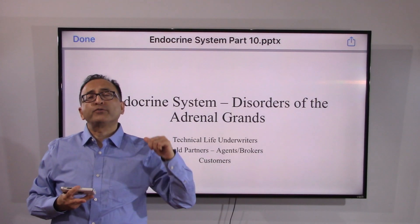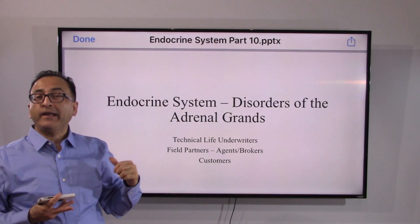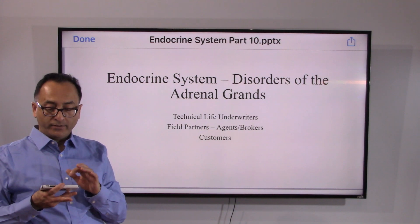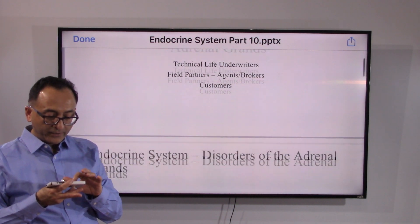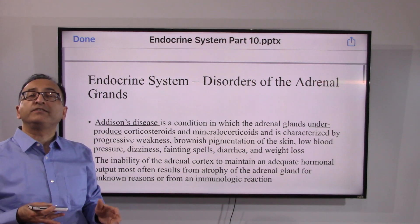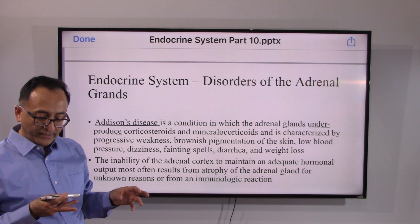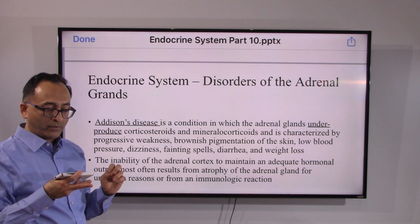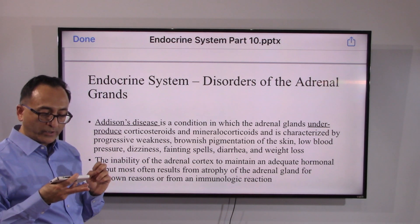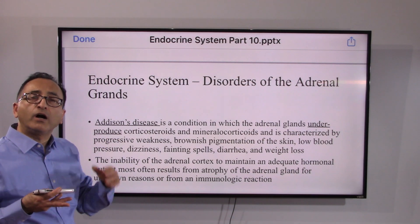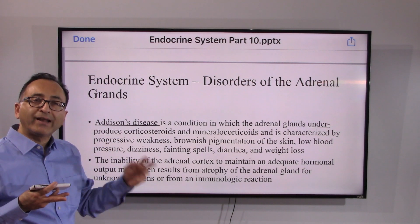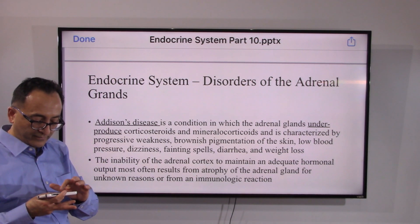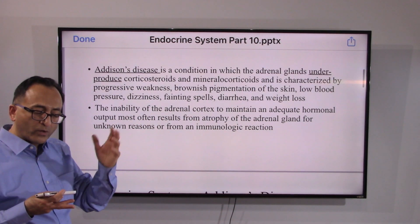Welcome back. We reviewed the adrenal glands and some of their disorders. One more frequently seen disorder is Addison's disease. Simply speaking, it is the hypo — or under — production of corticosteroids, the hormones produced by the adrenal glands, and this can lead to Addison's disease.